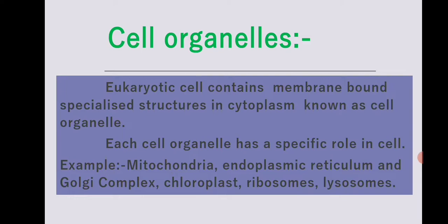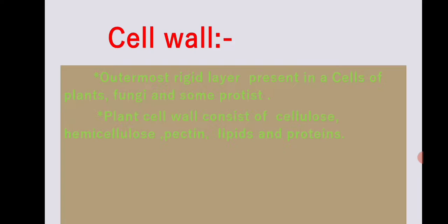Now we will study the cell wall structure. The cell wall is a tough, rigid structure that provides cell protection and maintains cell shape. It is present in the cells of plants, fungi, and some protists. The cell wall consists of cellulose, hemicellulose, and pectin.